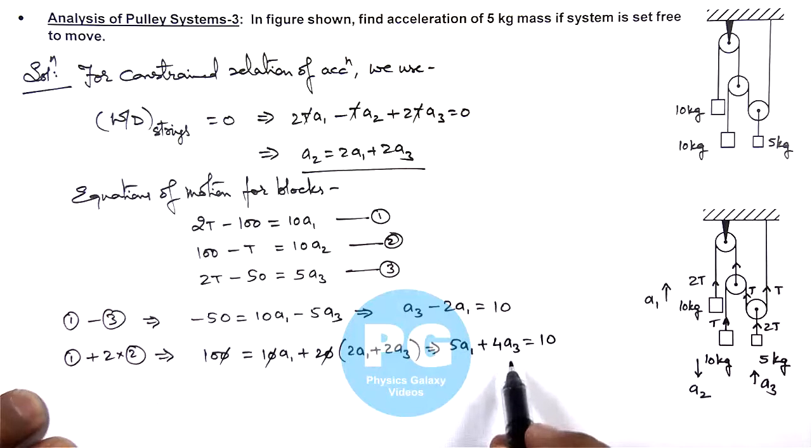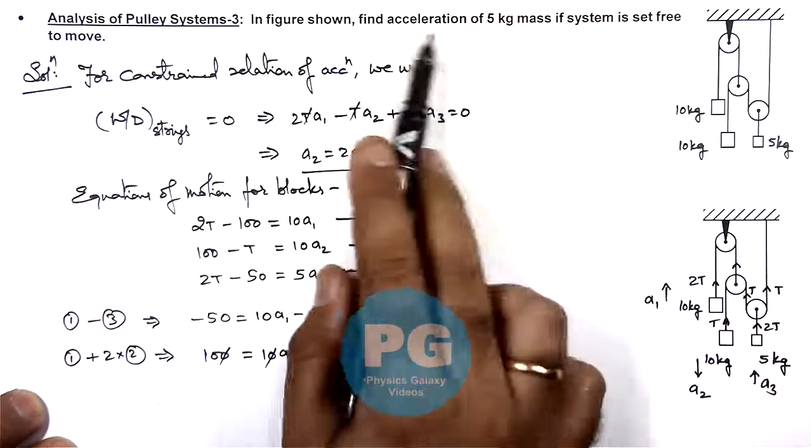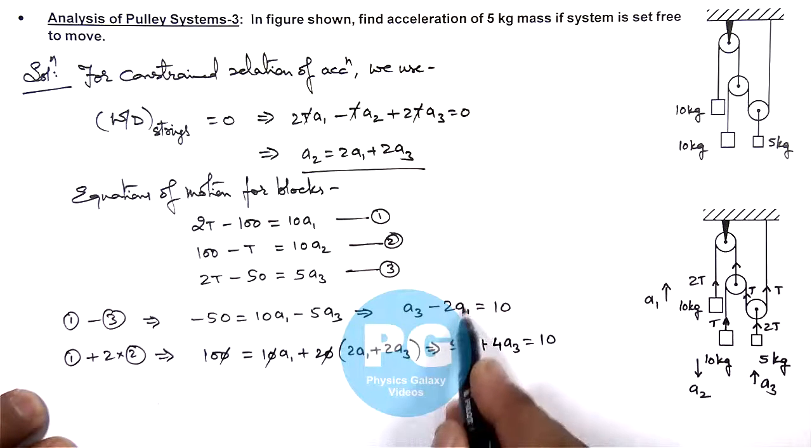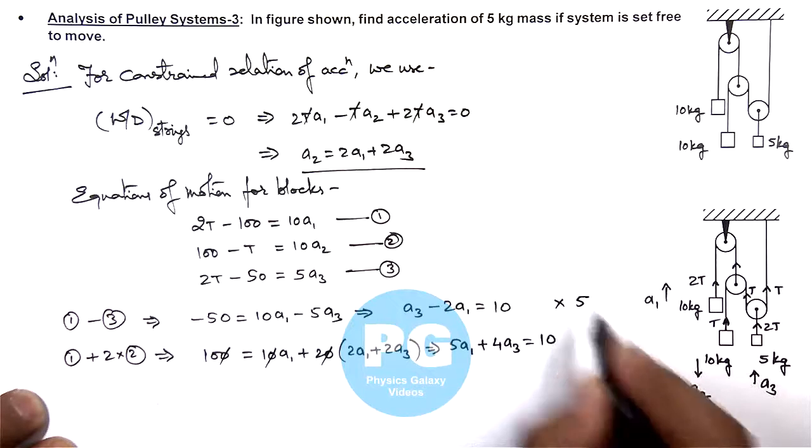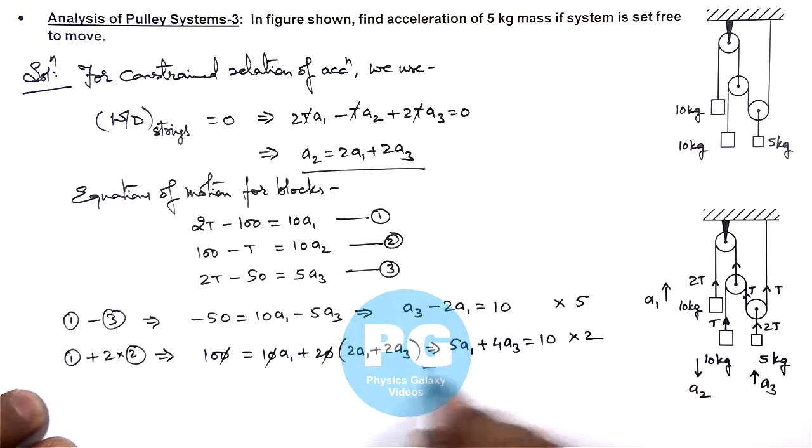So as we have got these two equations and we are required to find the value of a3 and the acceleration of 5 kg mass, so we need to eliminate a1. So we can multiply first equation with 5, second with 2, and we add up these two equations.